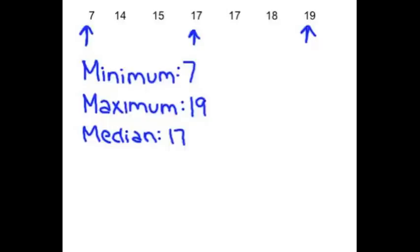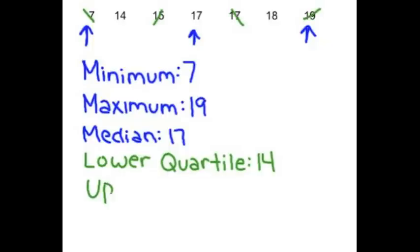We now have three of the five numbers. The lower quartile is the median of the lower half, not including the median, so the lower quartile is 14. The upper quartile is the median of the upper half, which is 18. That is our five number summary.